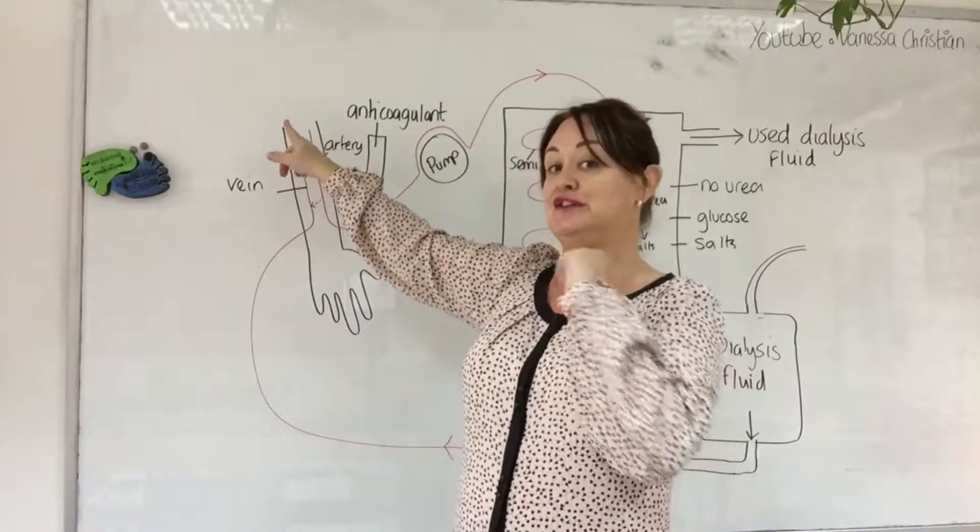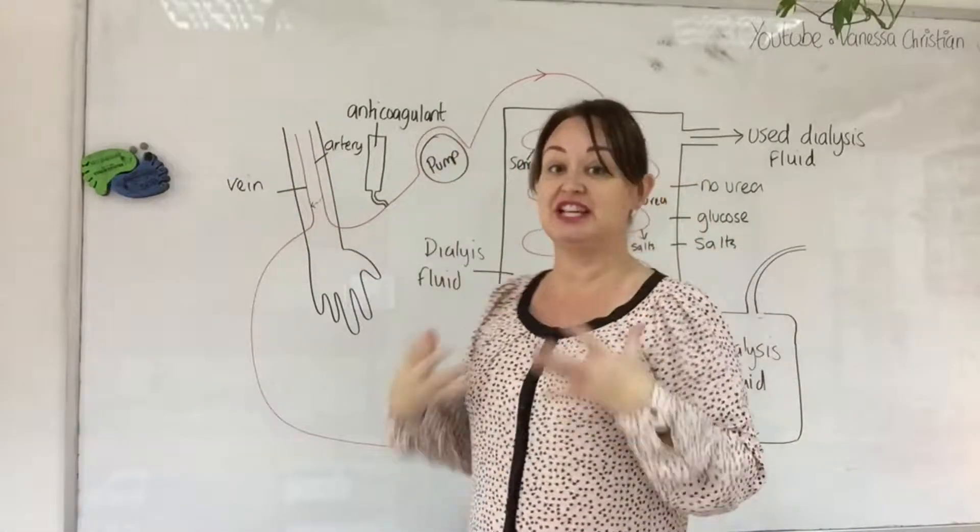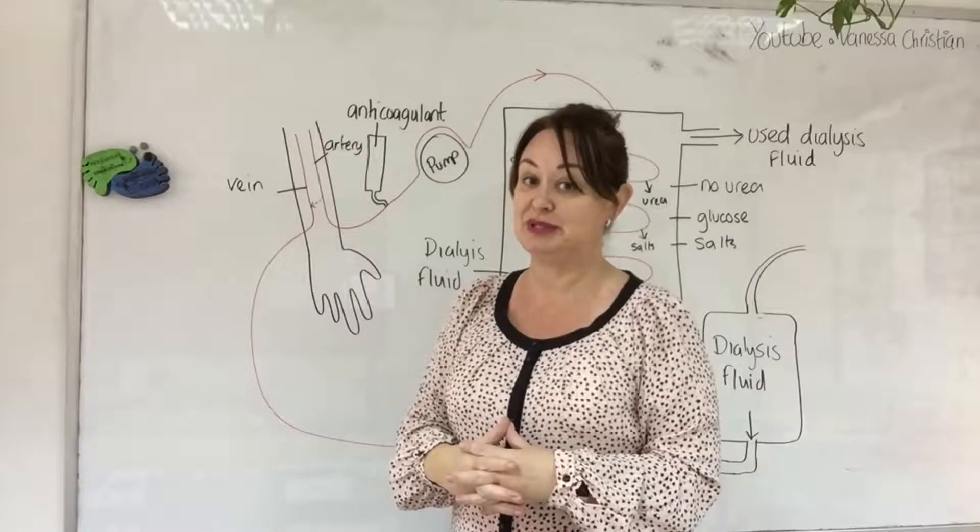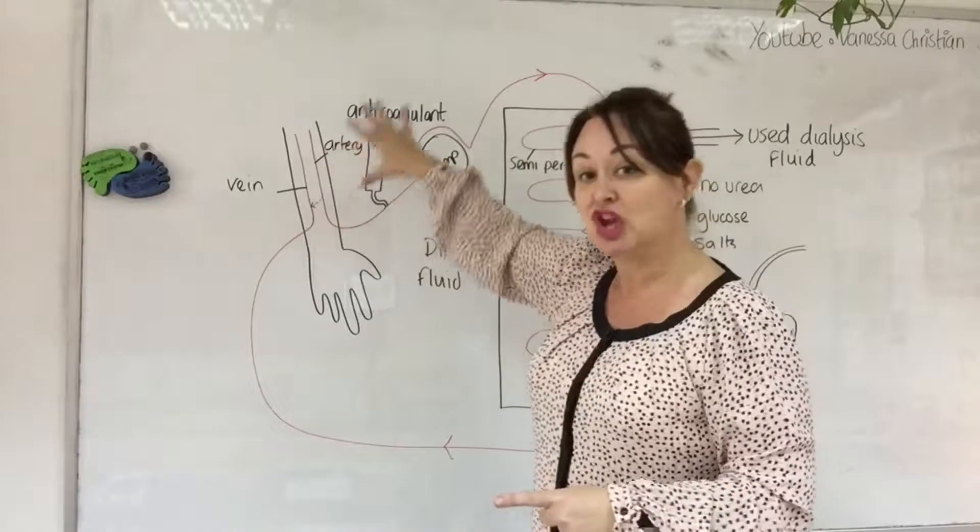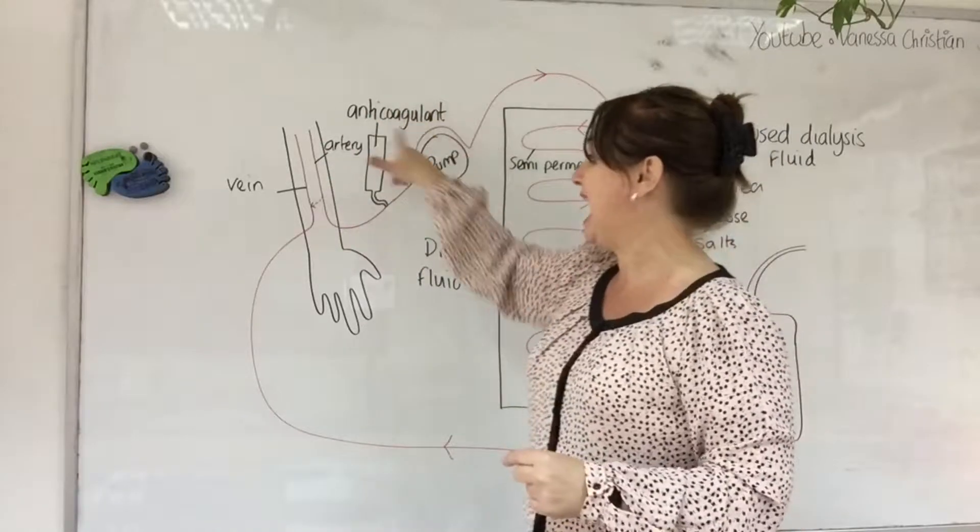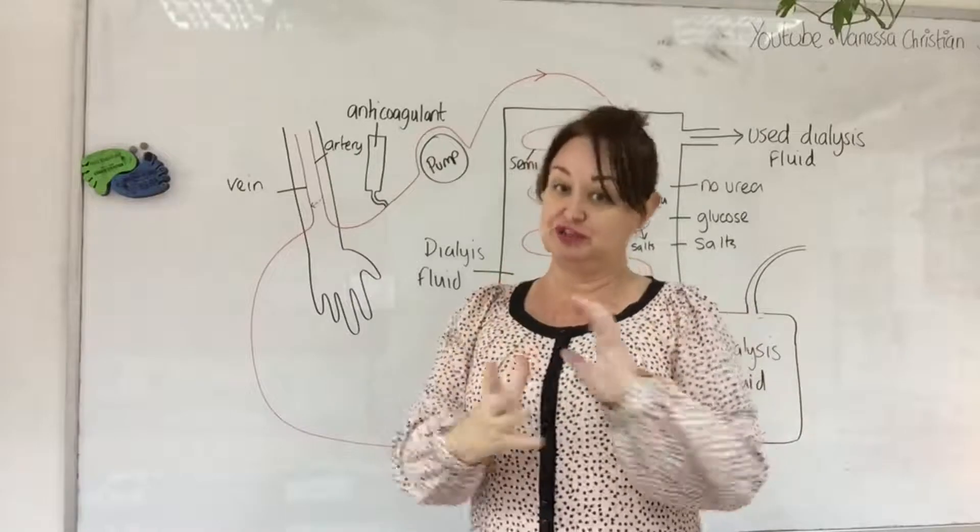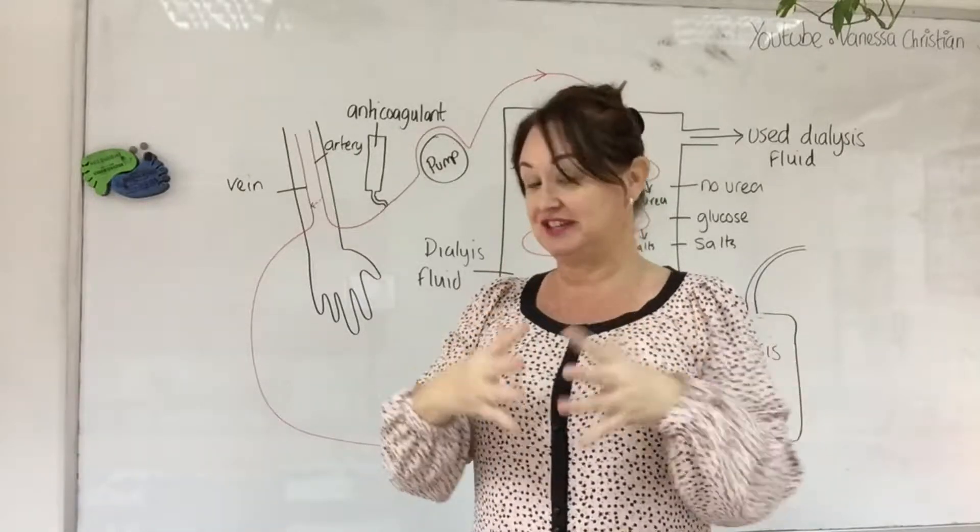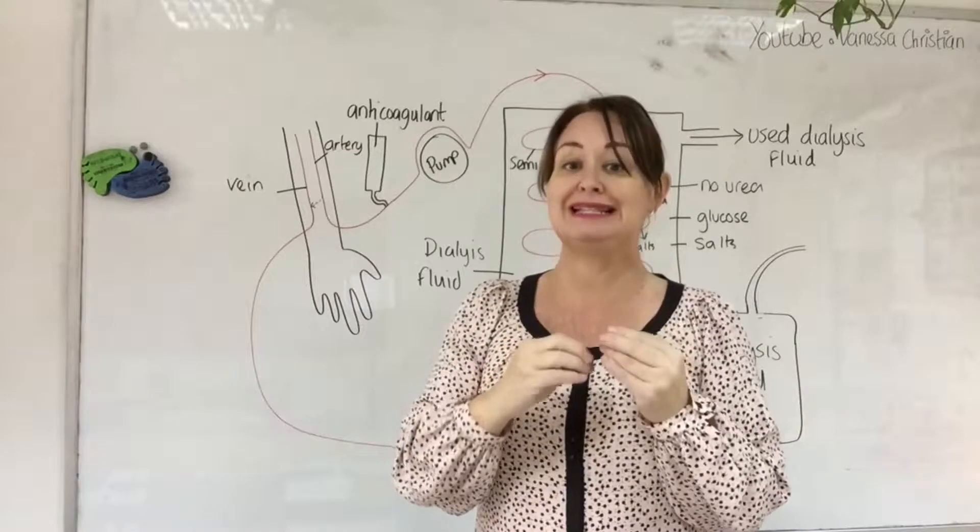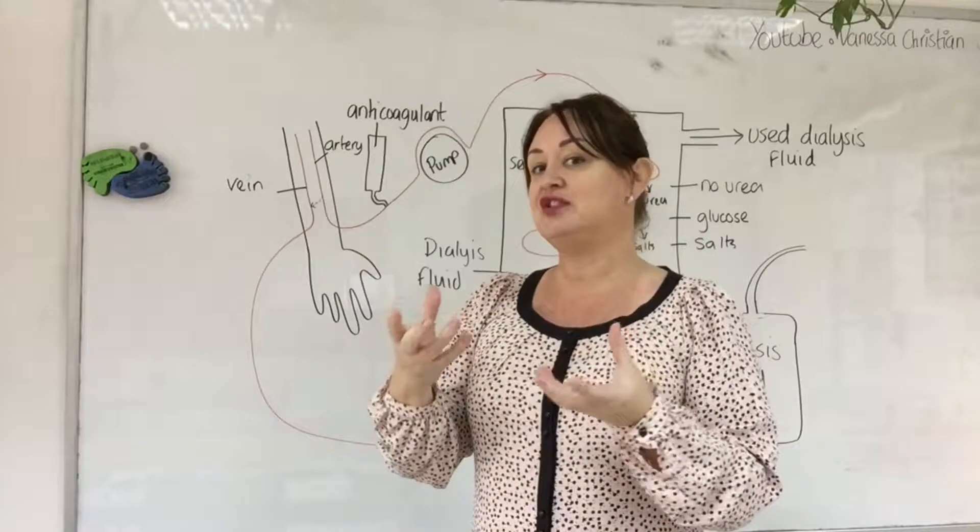It's fed up through a tube which is similar to the Visking tubing that you used in the last experiment. Then a pump pumps the blood along and an anticoagulant is added. We want to stop that blood from clotting. Remember, when blood comes into contact with a rough surface the platelets become sticky and they begin to clump together and clot the blood.